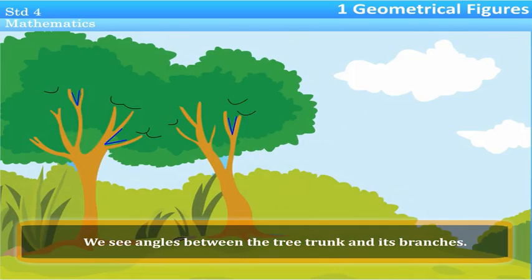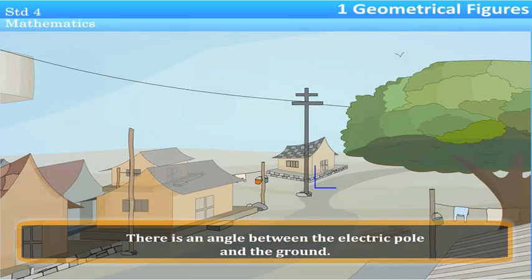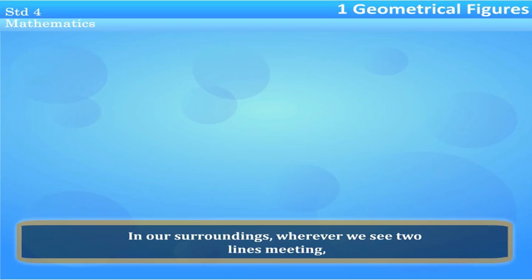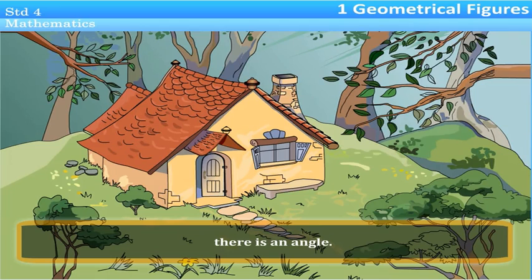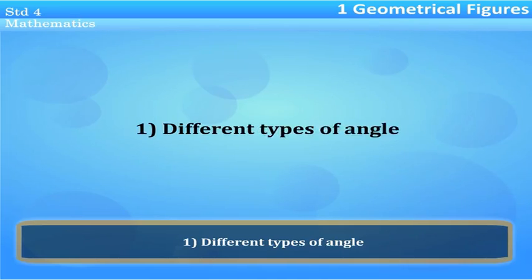We see angles between the tree trunk and its branches, and there is an angle between the electric pole and the ground. In our surroundings, wherever we see two lines meeting, there is an angle.